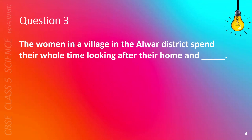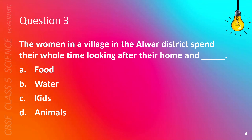Question 3. The women in the village in the Oliver District spend their whole time looking after their home and blank. A. Food, B. Water, C. Kids, or D. Animals. The correct answer is D. Animals.